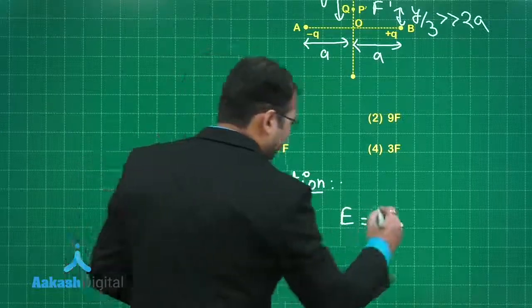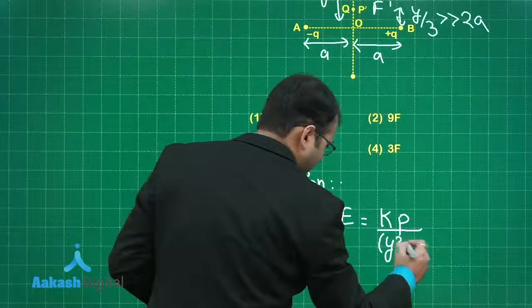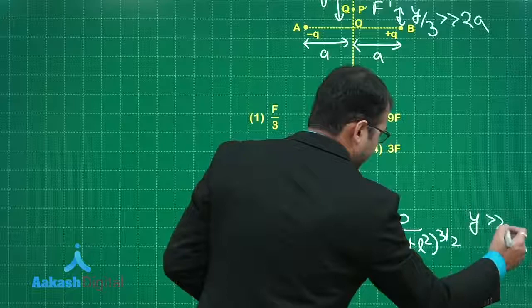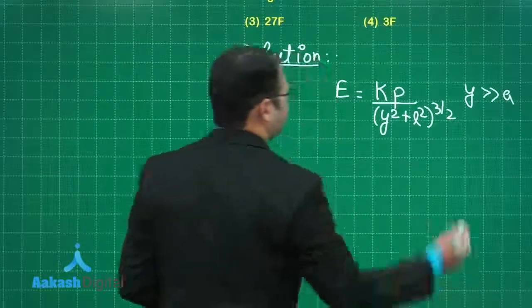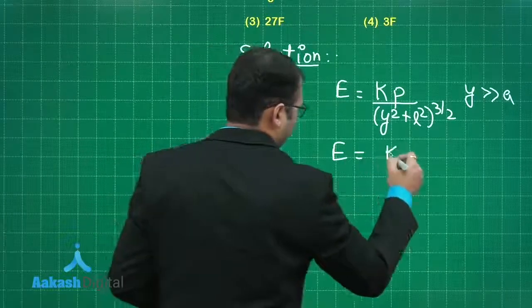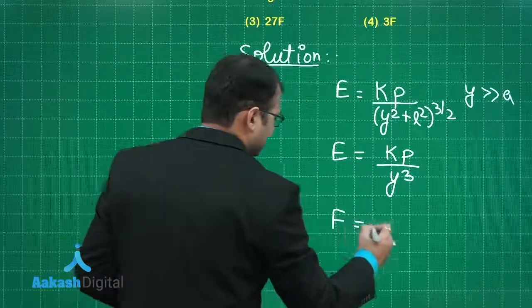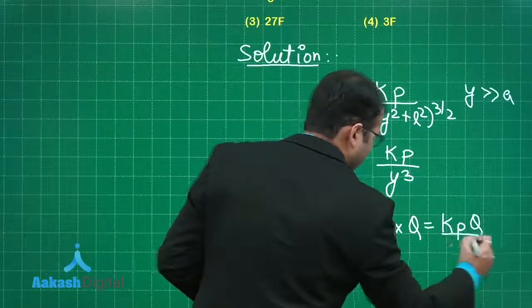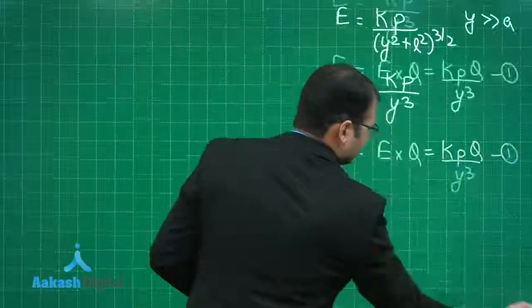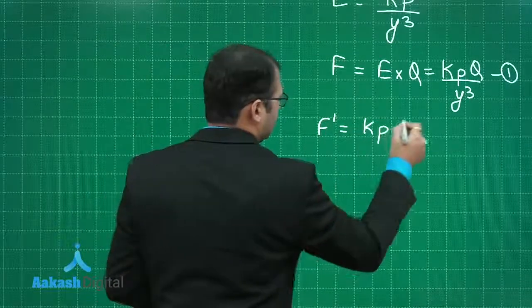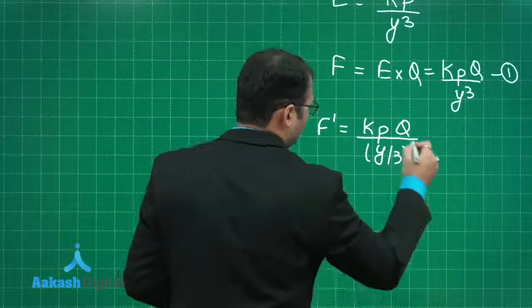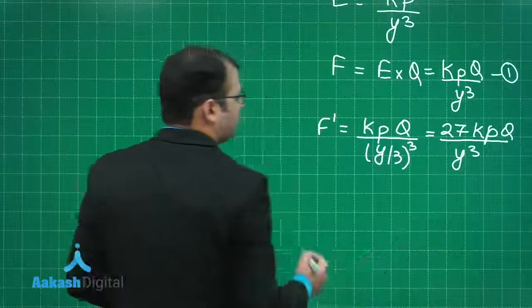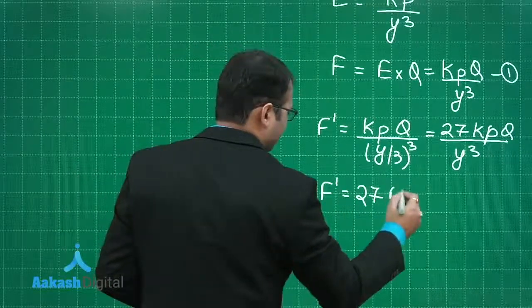The formula of electric field due to dipole would be Kp by Y square plus L square power 3 by 2. But here since Y is very very greater than A, you will write E as Kp divided by Y cube. The force exerted would be E into Q, which becomes KpQ upon Y cube. This is the first equation. The formula of F dash would be KpQ divided by Y by 3 whole cube, which equals 27 KpQ divided by Y cube. F dash would be 27 times F.